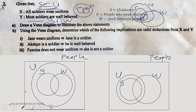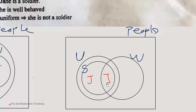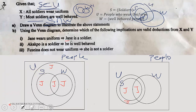Now let's look at the conclusions. For implication (i): Jane wears uniform. Jane can be placed anywhere within the uniform region U — she could be inside S, outside S, or in multiple positions within U.